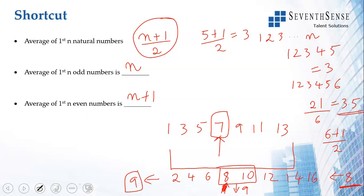To recap: we've covered what an average is, how to compute averages of a few numbers, and that the average must lie between the least and greatest values. For consecutive numbers, the average is the middle number when the count is odd, and the average of the middle two when even. The three key formulas are: average of first n natural numbers = (n+1)/2; average of first n odd numbers = n; average of first n even numbers = n+1.